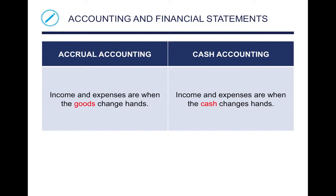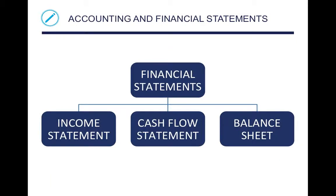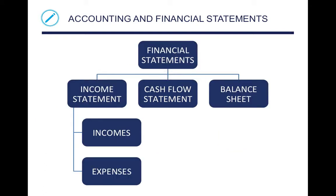Accrual accounting records income and expenses when the goods change hands, and cash accounting records income and expenses when the cash changes hands. The difference between the two is goods versus cash, and that's it. Financial statements give you three main things: the income statement, the cash flow statement, and the balance sheet, and they all show different things. The income statement basically shows income and expenses.